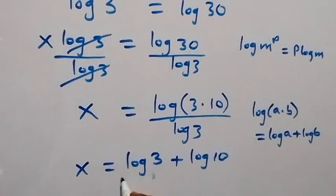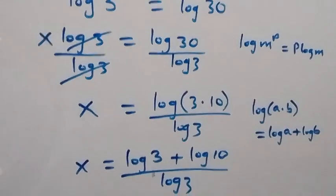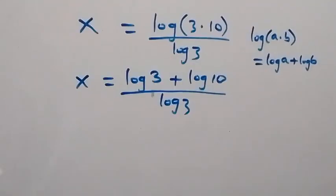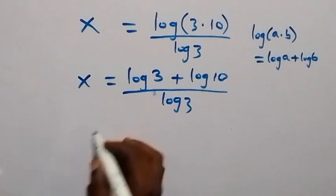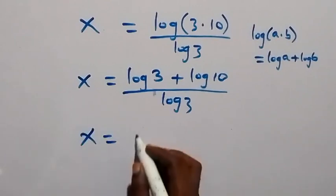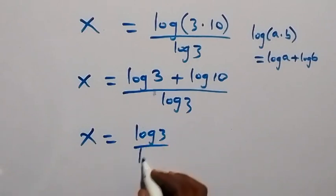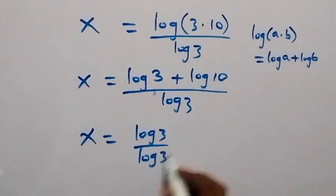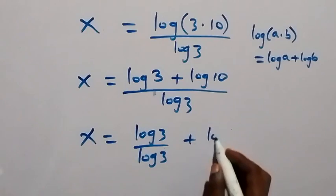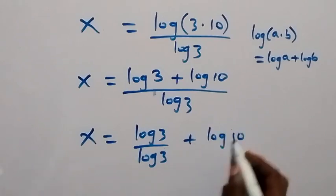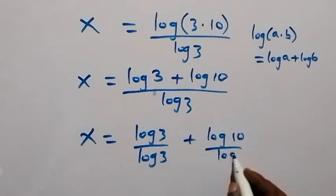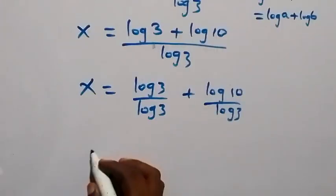Then from here we can separate this fraction now, and this will be x equals to log 3 over log 3, then plus log 10 over log 3. Then here log 3 cancels each other and that is 1.